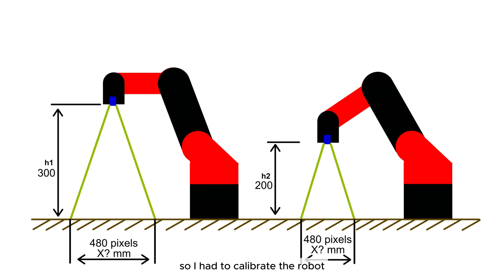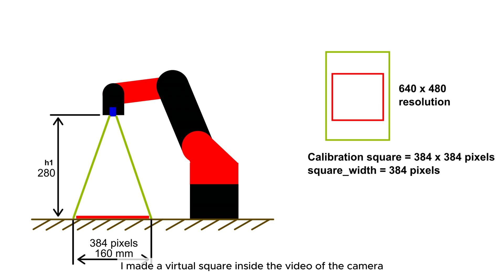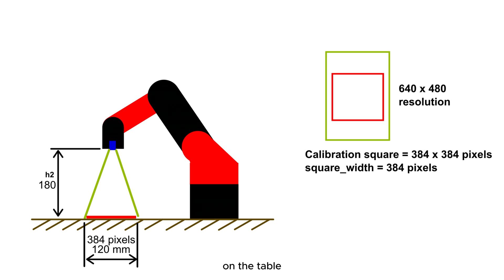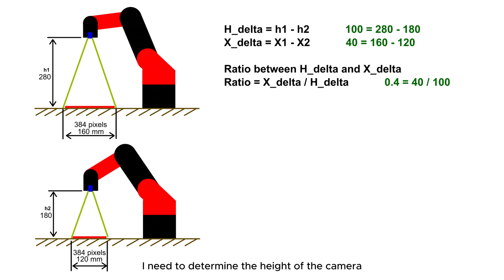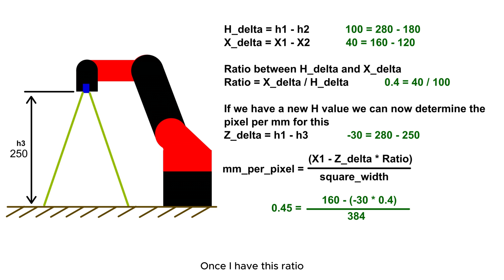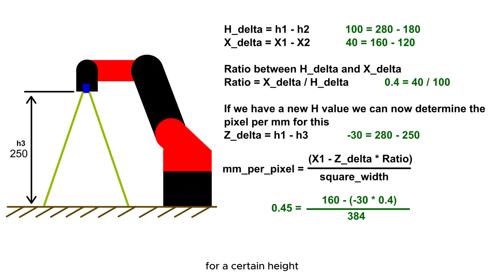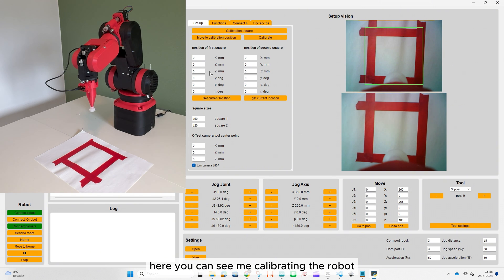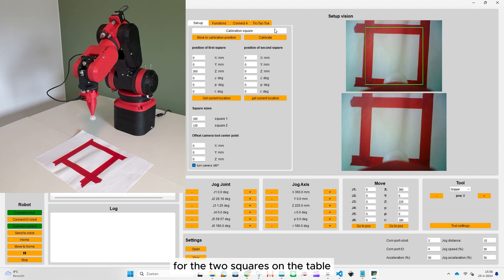So, I had to calibrate the robot. I made a virtual square inside the video of the camera that needs to match the calibration square on the table. There are two sizes of squares on the table, and for both I need to determine the height of the camera. When I know the two heights, I can calculate the ratio between the X delta and the H delta. Here you can see me calibrating the robot by finding the right height for the two squares on the table.